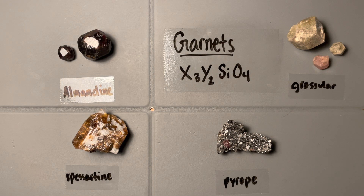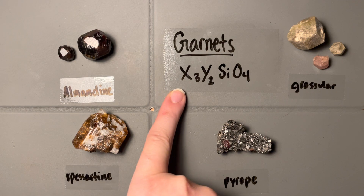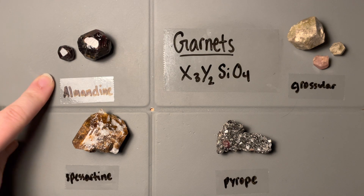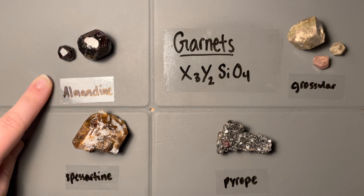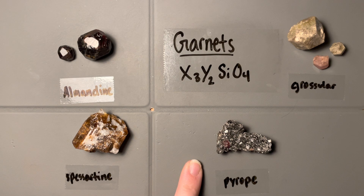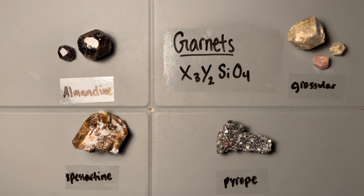Here we have our group of garnets. This is a really common gem. We have the general chemical formula with a lot of different substitutions. We have almandine, which is our iron and aluminum member; spessartine, the manganese and aluminum member; pyrope, magnesium and aluminum; and grossular, calcium and aluminum. This is just a selection of four garnets — there's a whole bunch because different substitutions give us different garnets and different colors.